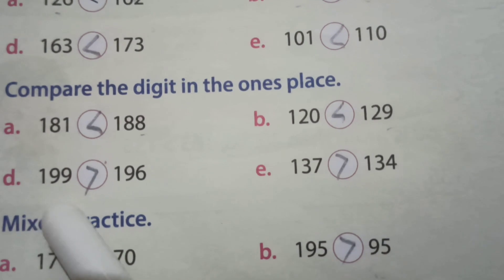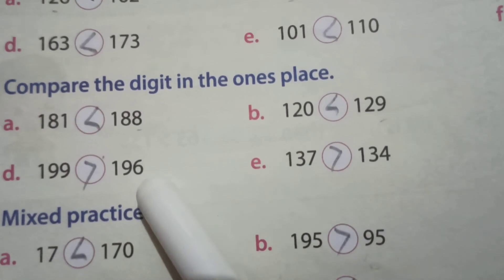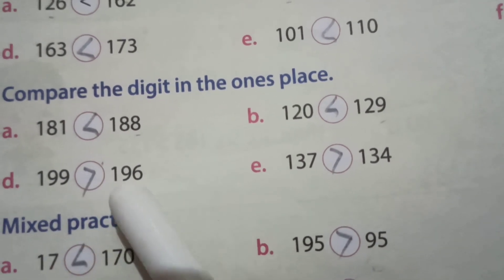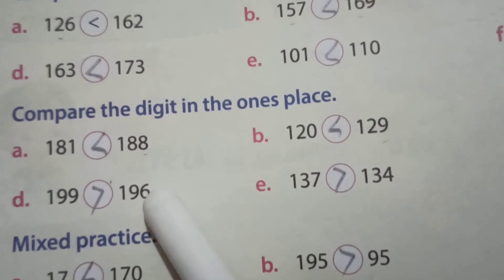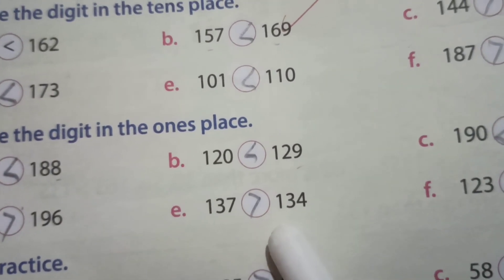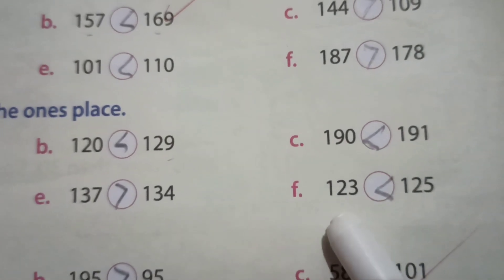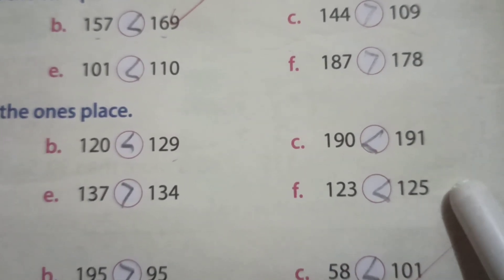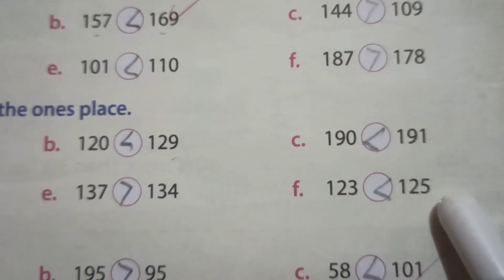199 is greater than 196 because 9 is greater than 6 — we consider the 1st place here. 137 is greater than 134. Next, 123 is less than 125 because 3 is less than 5.